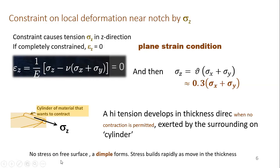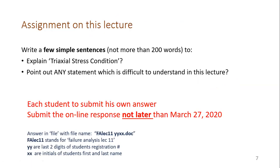Now coming to the assignment: the date will be extended after a meeting. The nomenclature for the assignment will be: failure analysis, then lecture number, then your registration number. Two letters are initials, followed by failure analysis, lecture number, and registration number.